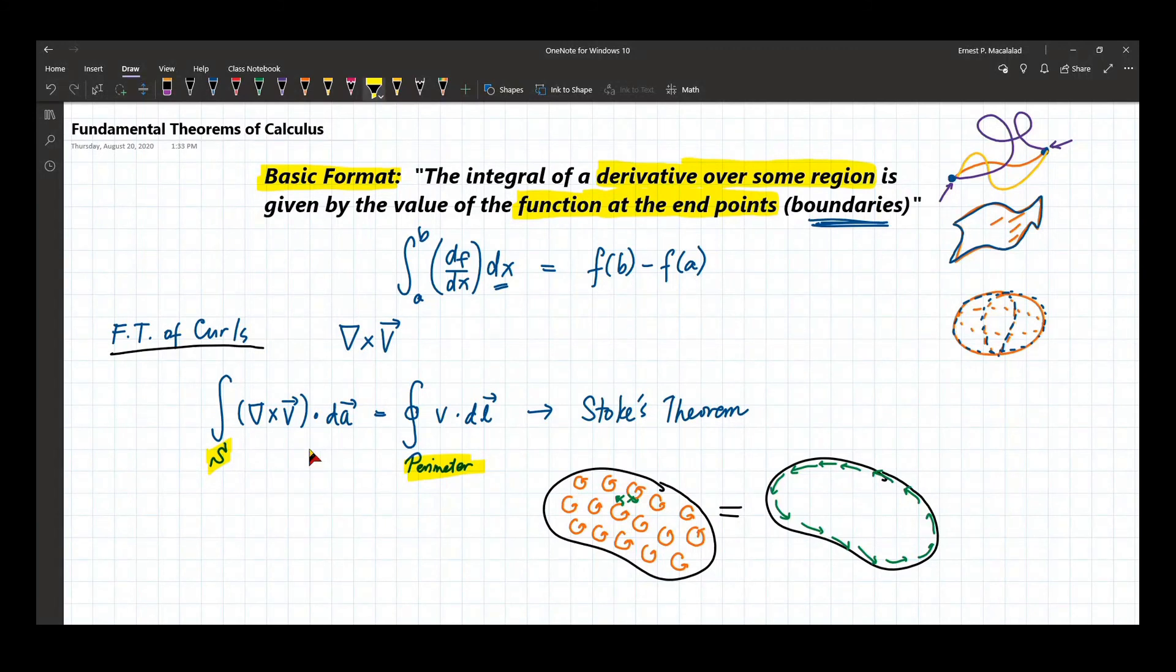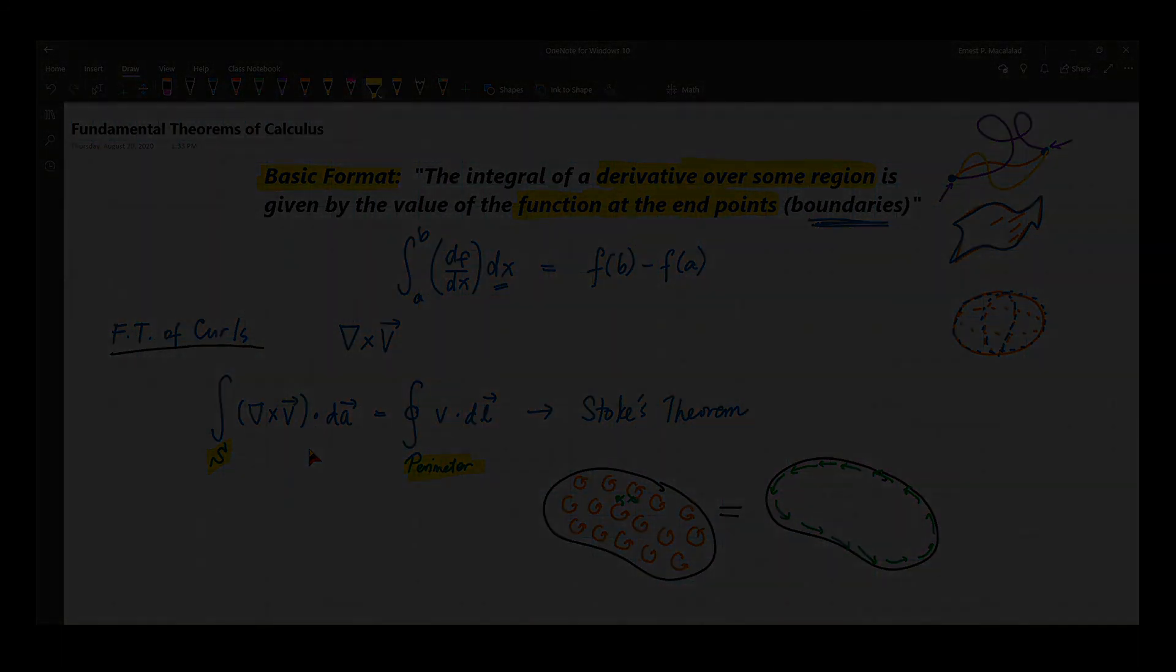So we're going to use Stokes theorem together with the divergence theorem to convert or to translate the integral form of certain laws in the Maxwell's equation or certain equations in the Maxwell's equation from the integral form to its differential form and vice versa. So Stokes theorem and divergence theorem together with fundamental theorem of gradients are very convenient tools to express the same laws in electrodynamics in different forms, whether that is in differential form or integral form.